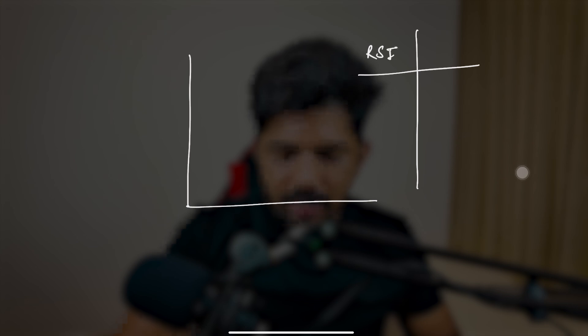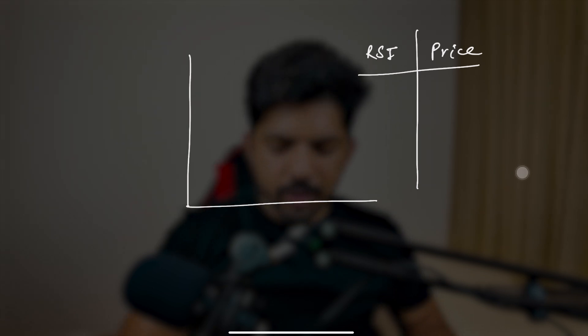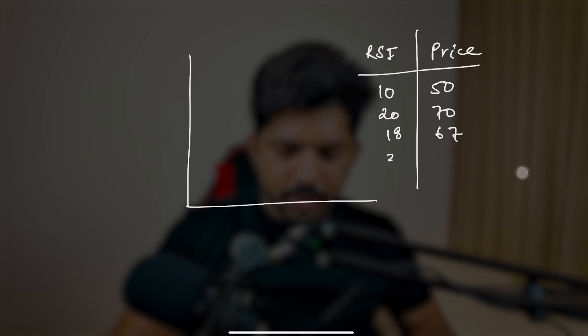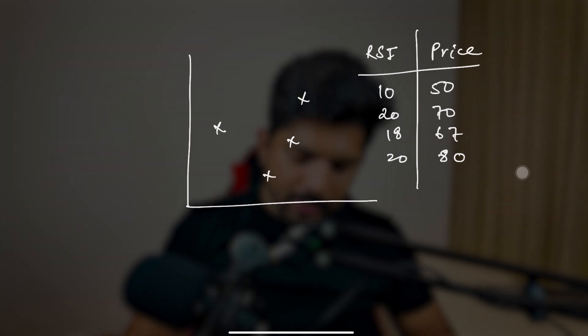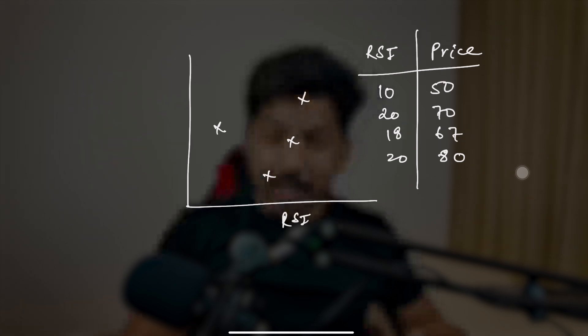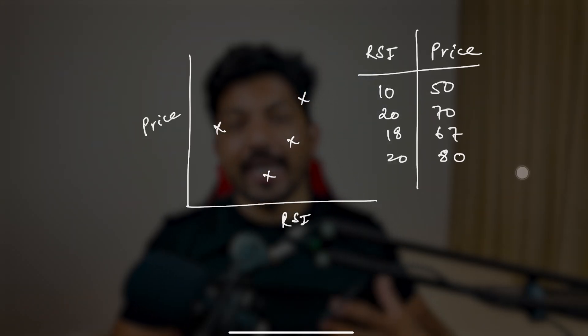Now let's understand gradient descent in terms of linear regression. For simplicity, we will understand this with the help of linear regression. Let's say we take two variables: RSI and price. I'll take just four basic points. When the RSI is 10, the price is 50; when it is 20, the price is 70; when it is 18, the price is 77; and when it is 20, it is 80. So we have four points. RSI is the input or independent variable, and price is the output or dependent variable.